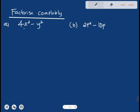So, this one, the first one, 4x squared minus y squared. Now, you know that there's nothing common here. In this case, what we have here is a minus in the middle.